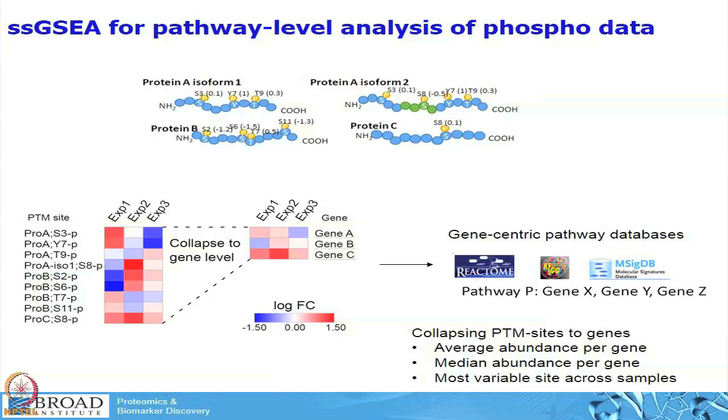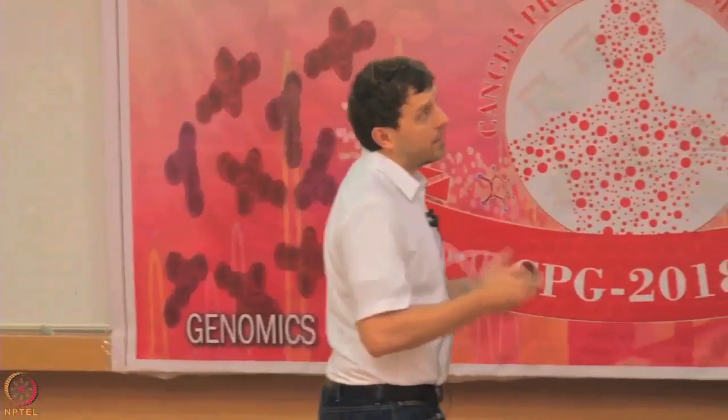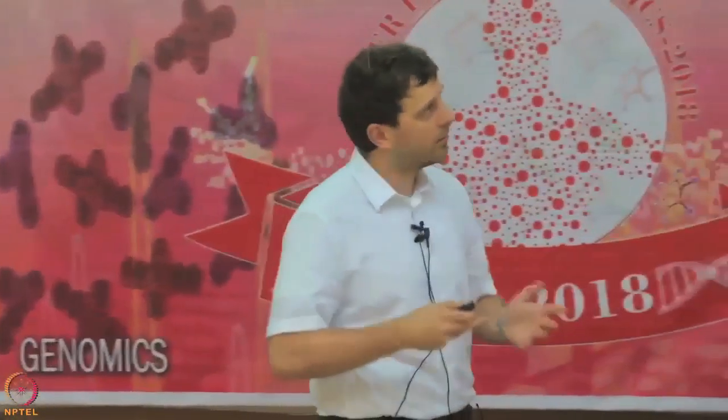In order to do pathway analysis, all of these pathway databases are gene-centric — a pathway is a list of genes. Right now all of the databases we have are curated at a gene level. So if you want to do any pathway level analysis of phospho data, you first have to collapse all of these measurements of phospho sites into gene levels. We are basically throwing away a lot of information, but that is something we have to deal with right now, because there are no databases curated at the PTM site level or at the protein or isoform level.